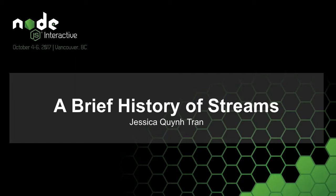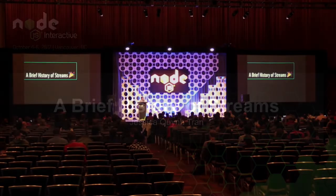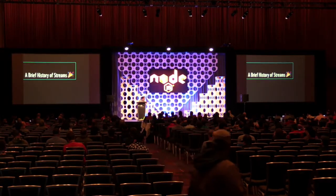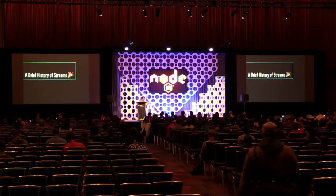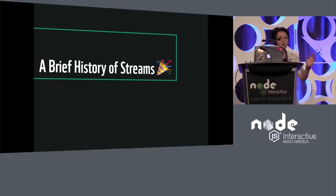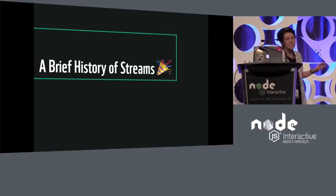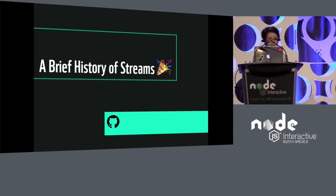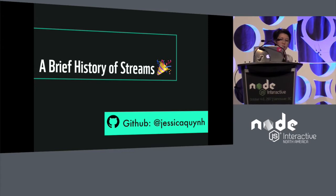This is my talk, called A Brief History of Streams. If you came because of the abstract, I've changed it a little bit since I submitted, and I apologize, but I hope it will still be interesting to everyone here. My name is Jessica Tran, and you can find me at GitHub as Jessica Quinn. Any other forms of social media presence will require some light Googling.